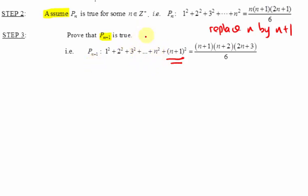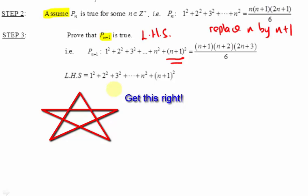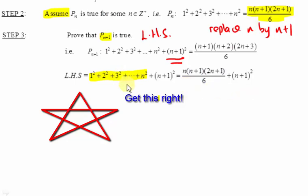Since the left-hand side of Pn plus 1 can be simplified further, we start to prove from the left-hand side. For the induction step, we make use of the step 2 assumption. The step 2 assumption says that 1 squared plus 2 squared, all the way until n squared, equals this expression. So this part of the left-hand side can be replaced by that expression, which simplifies our expression. In mathematical induction, we often take the result from step 2 and substitute it into step 3 to simplify. Make sure you understand this before proceeding.